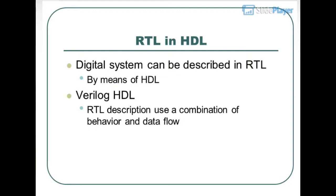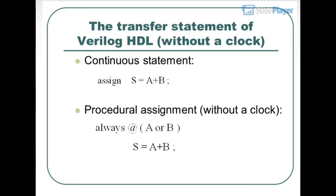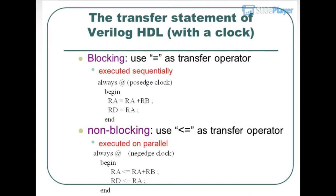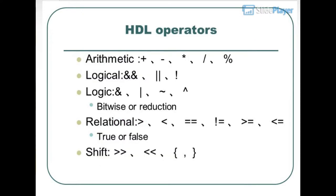A digital system can be described in RTL using Verilog HDL. RTL description uses a combination of behavioral and data flow. Transfer statements in Verilog HDL without a clock use continuous statements or procedural assignments. With a clock, blocking assignments use '=' as the transfer operator and execute sequentially. Non-blocking assignments use '<=' as the transfer operator and execute in parallel.